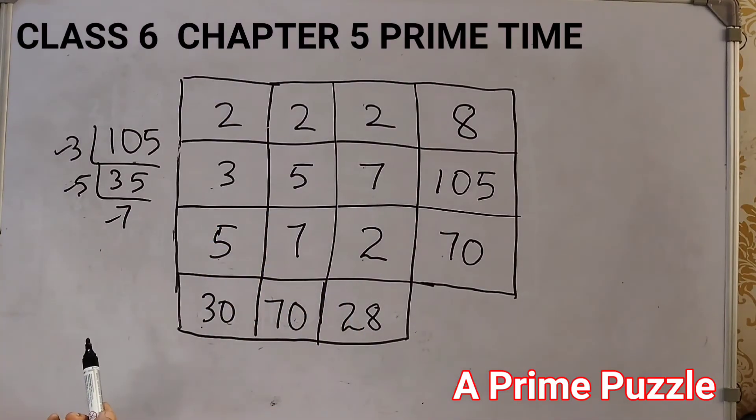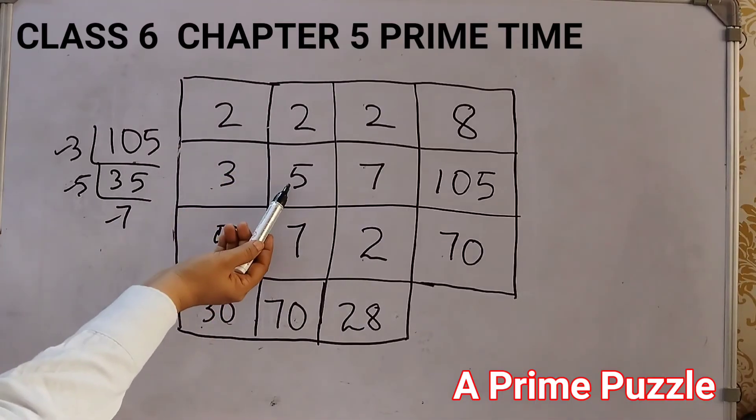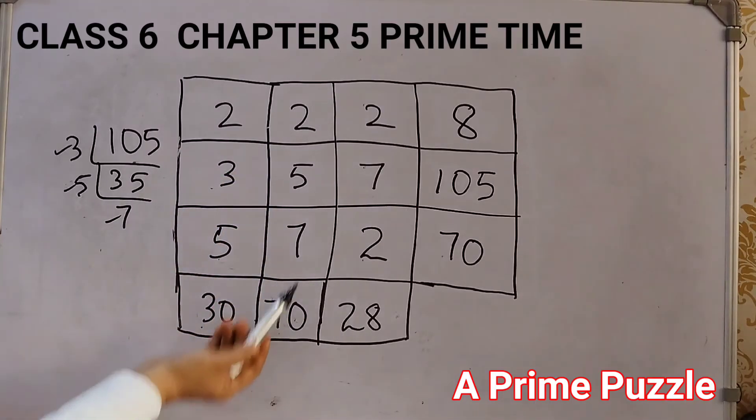Next let's check out the columns. 2 into 3, 6, 6 5's are 30. 2 5's are 10, 10 7's are 70. 2 7's are 14, 14 2's are 28.